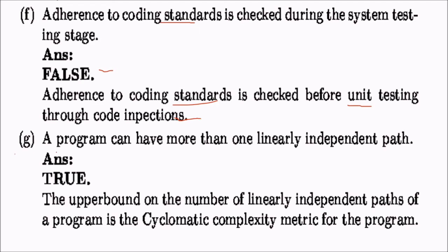Statement g: a program can have more than one linearly independent path. This is of course true, because the upper bound on the number of linearly independent paths of a program is the cyclomatic complexity of the program.